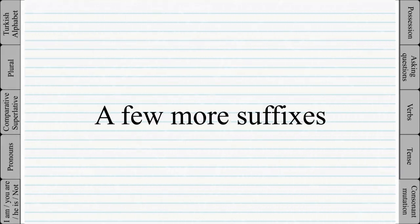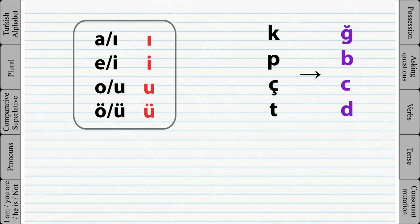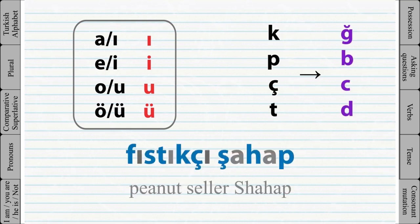There are many more useful and important suffixes, but we can't talk about all of them in one video. For now we will briefly talk about a few of them. If you can remember and master the vowel harmony rules, the consonant mutation, and the Fıstıkçı şahap mnemonic, then you can easily learn and use all the new suffixes.